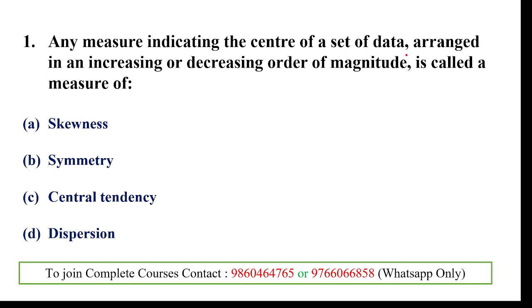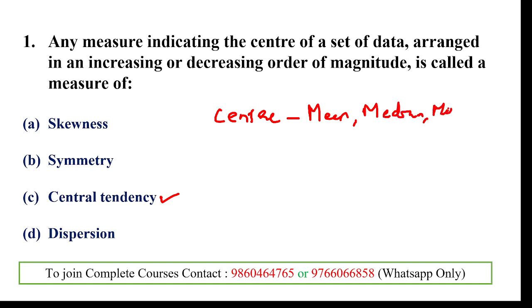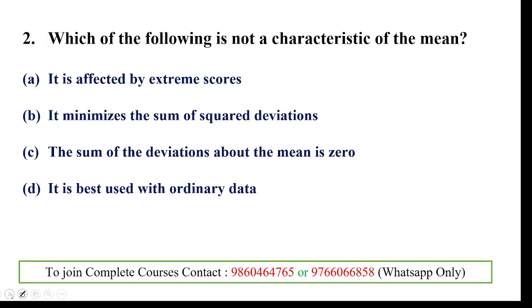First question: any measure indicating the center of a set of data arranged in an increasing or decreasing order of magnitude is called a measure of dash. In this question, the center of a set of data is given and we want to measure the central value — that's central tendency. We use mean, median, and mode to get the central value. Answer: option C.